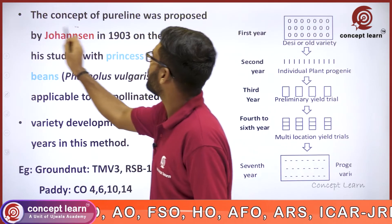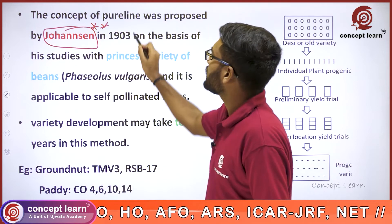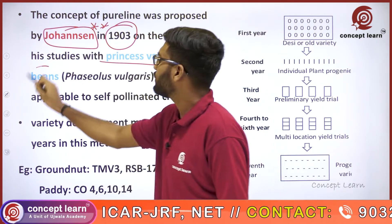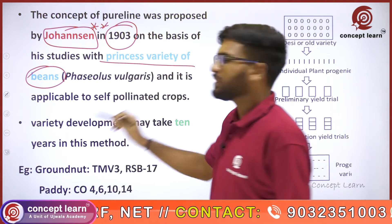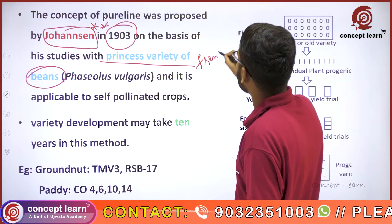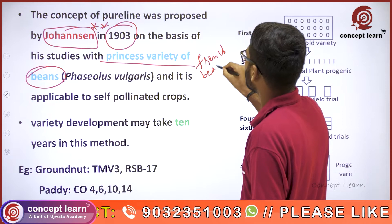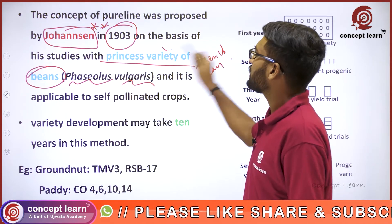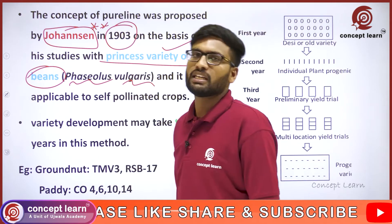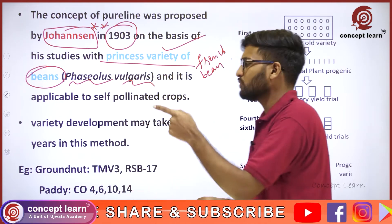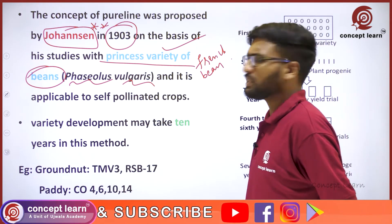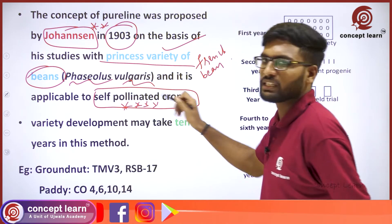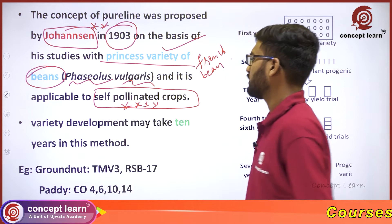Pure line selection concept was given by Johansson in 1903, based on his studies with the Princess variety of beans — French beans. The scientific name of French beans is Phaseolus vulgaris. In Phaseolus vulgaris, Johansson worked with the Princess variety and discovered the pure line theory. Pure line concept is applicable only to self-pollinated crops.